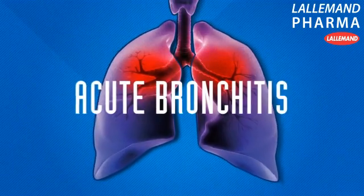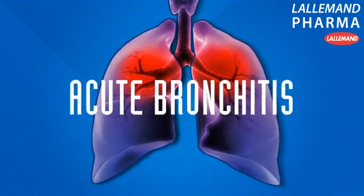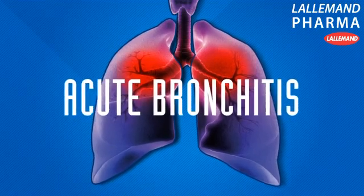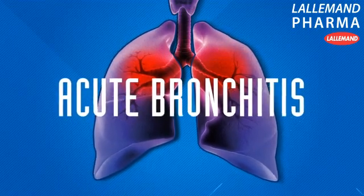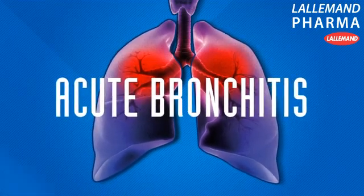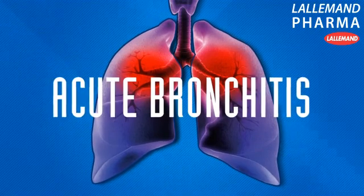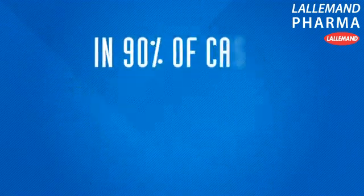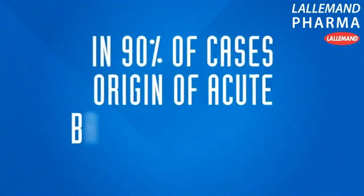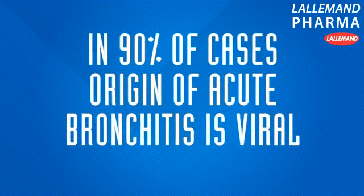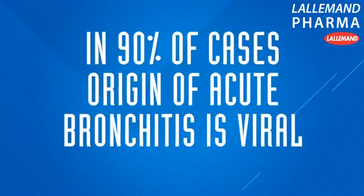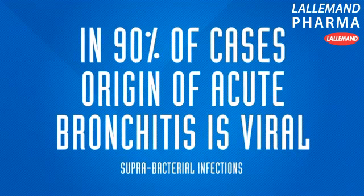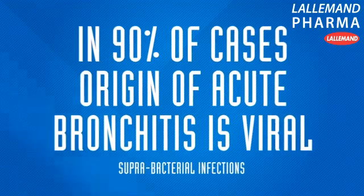Bronchitis is an inflammation of the mucosal membranes of the bronchi. Acute bronchitis often develops from the common cold or other respiratory infection. The origin of acute bronchitis is viral in 90% of cases, but suprabacterial infections can occur.